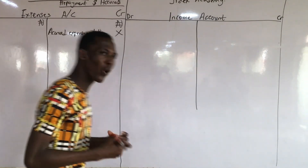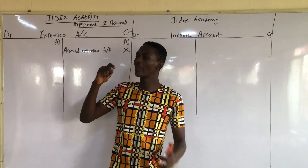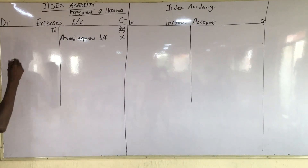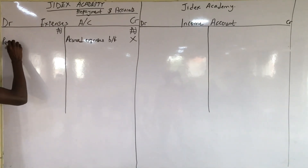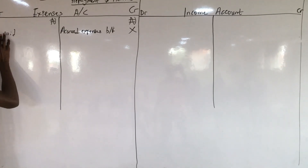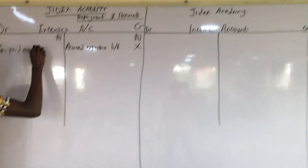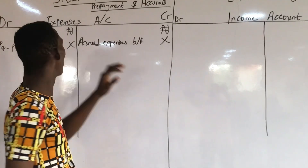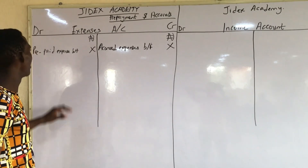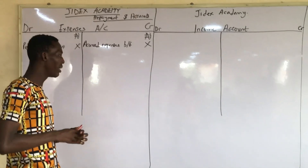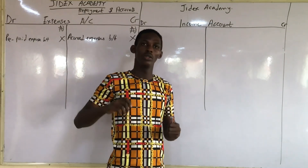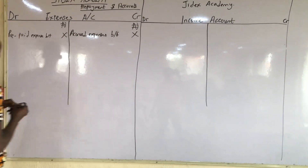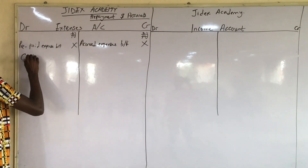Prepaid expenses is an asset because it is paid in advance, and therefore it is expected to generate a return in the form of a benefit. Because it is paid in advance, it is an asset, so it will be on the debit side. When you make payments from the cash book, the corresponding entry will be on the debit side of the expenses account.